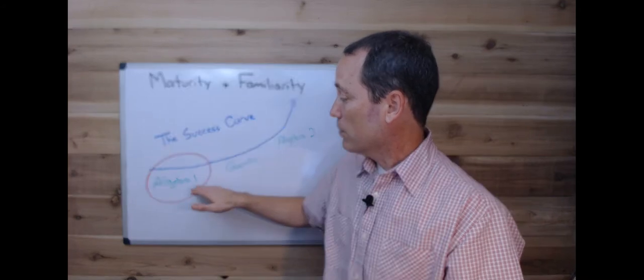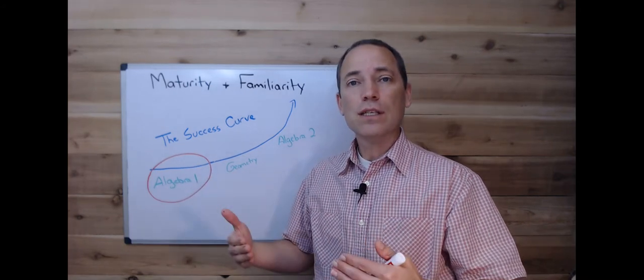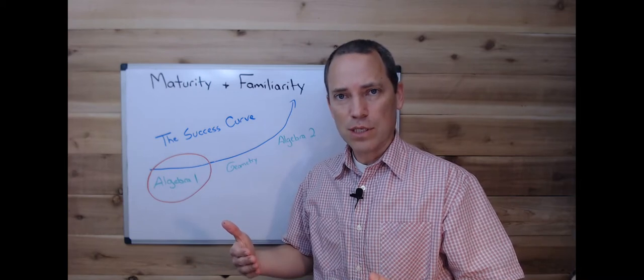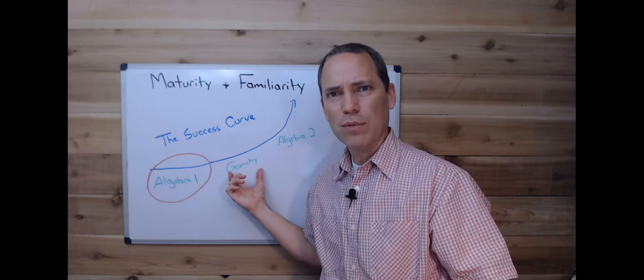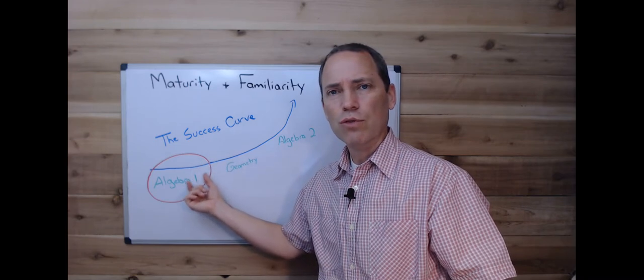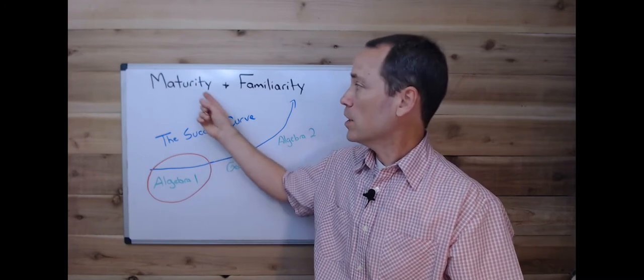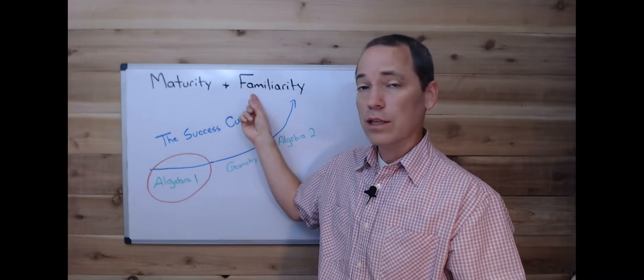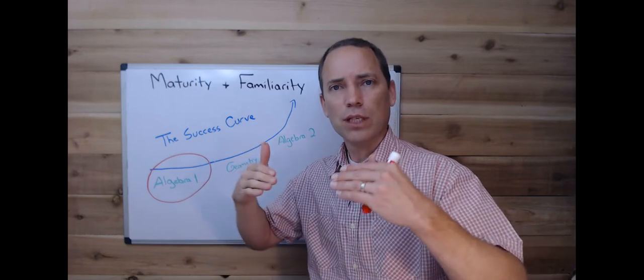And once you make it out of Algebra 1 and you're into geometry, then you're getting to revisit some of these algebra concepts again as they're applied to shapes and some new stuff in geometry, but also getting to revisit Algebra 1, then there's some familiarity there. Students are a year older, they're familiar with some of the algebra concepts, so it's easier and it starts building on itself.